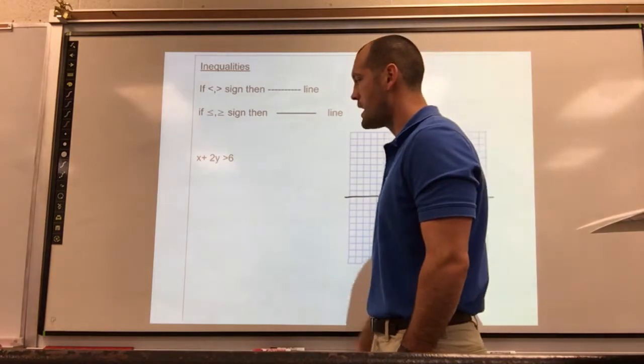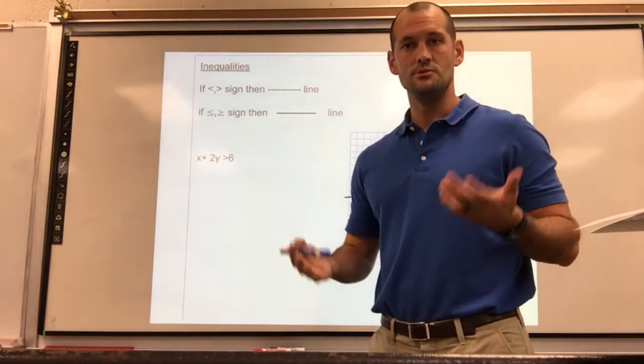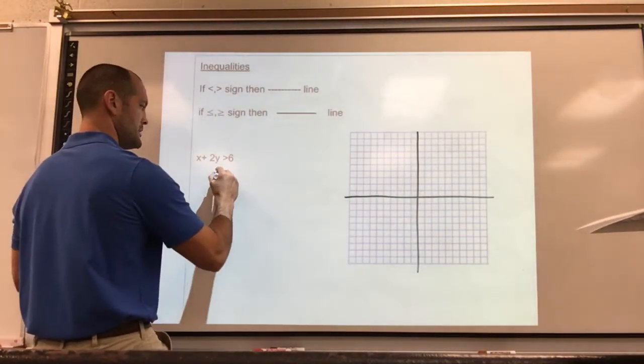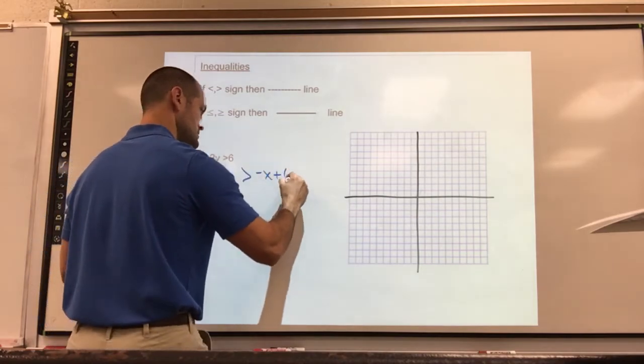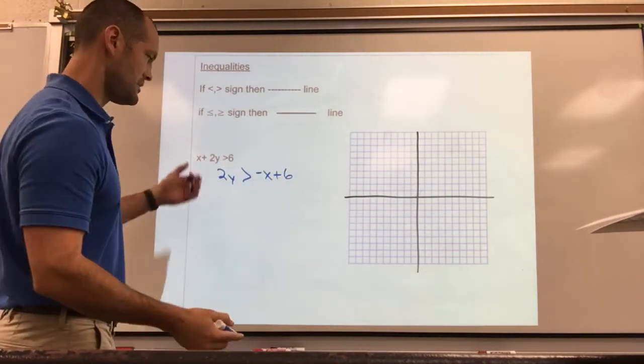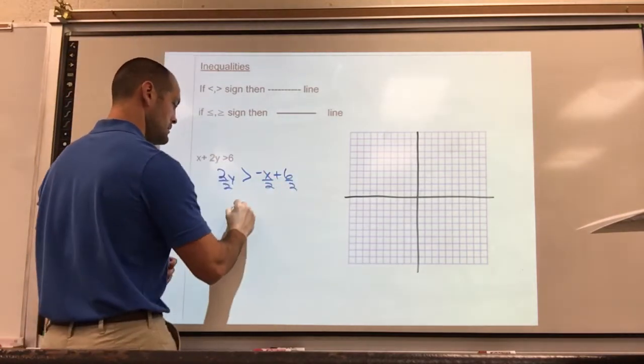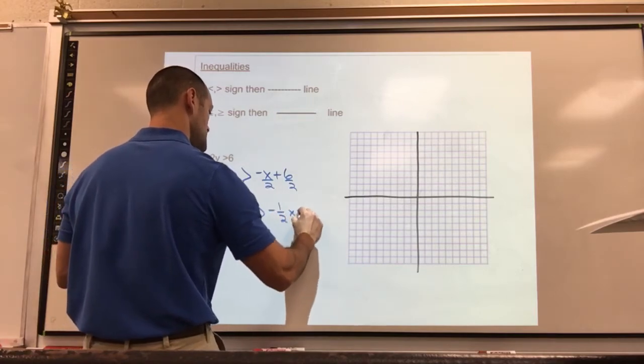So let's take a look at our first example: x plus 2y is greater than 6. First off, you're going to be graphing a line. You need to get it into slope-intercept form, so I'm going to subtract the x. 2y greater than negative x plus 6. Almost done, you should all know how to do this by now. Divide by the 2, all terms getting the same treatment. y is greater than negative one-half x plus 3.